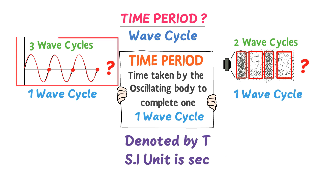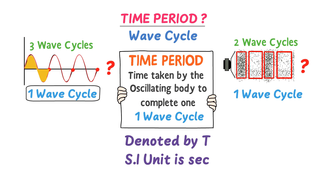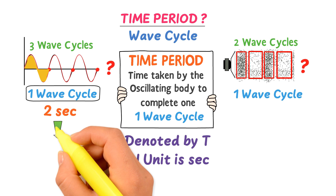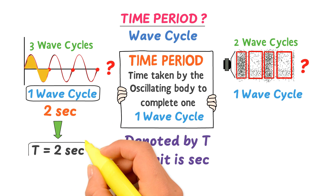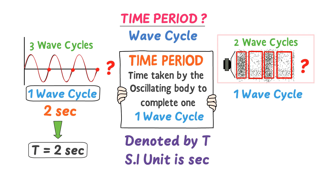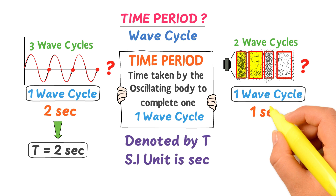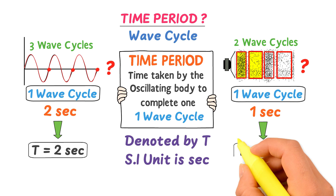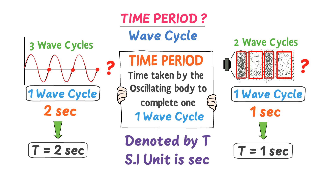For example, if this wave completes one oscillation or one wave cycle in two seconds, then its time period is T = 2 seconds. If this wave completes one oscillation or one wave cycle in one second, then its time period is T = 1 second. Thus remember that time period is the time taken by the oscillating body to complete one cycle.